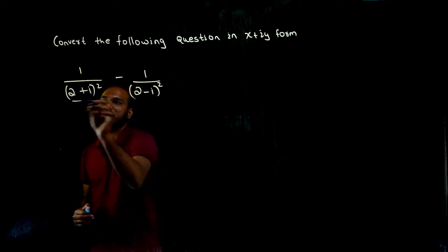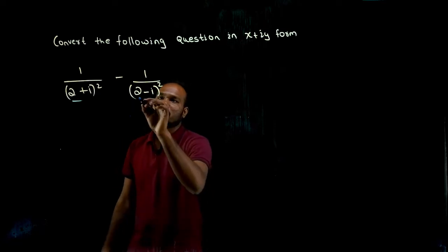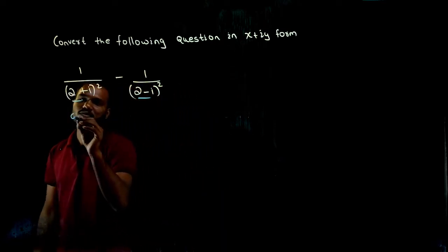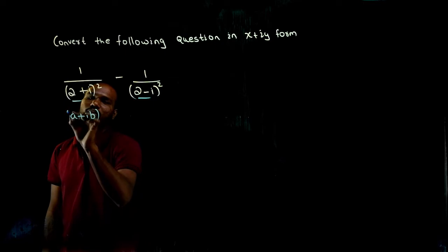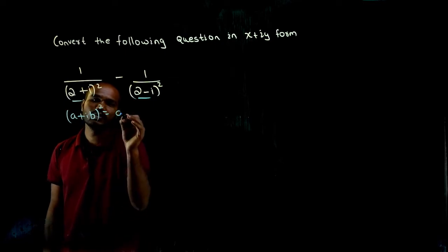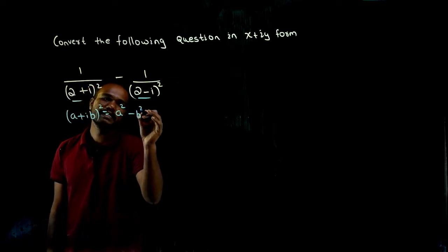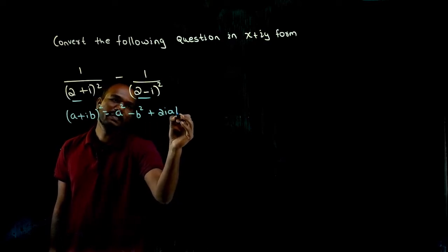See here in the denominator we have 2 plus i whole square. Here also 2 minus i whole square. First, let's know what is a plus ib whole square. a plus ib whole square is a square minus b square plus 2iab.